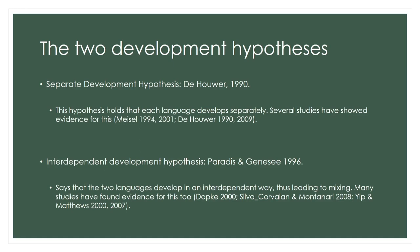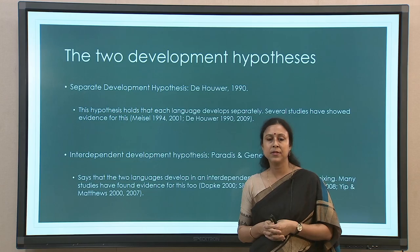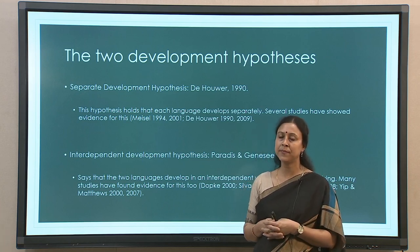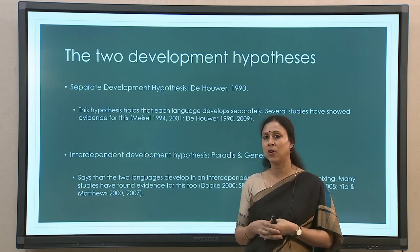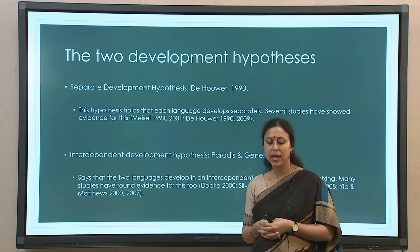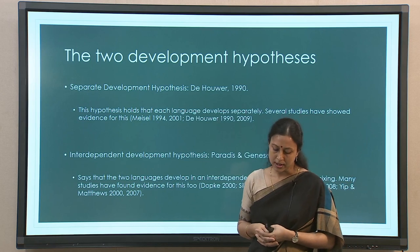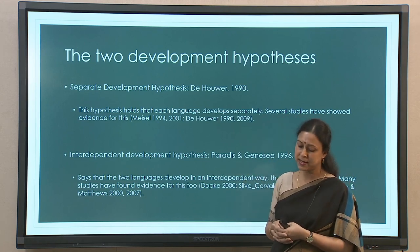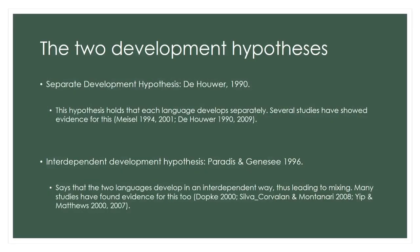This kind of contradictory finding brings us to two different development hypotheses for language skill among simultaneous bilingual children. One is the Separate Development Hypothesis (SDH) proposed by De Houwer, which holds that each language develops separately — there is no fused or unitary system; the systems develop independently of each other with no mixing up. On the other hand is what we have seen before: the unitary system, also called the Interdependent Development System by Paradis and Genesee, which says that the two languages develop in an interdependent way, thus leading to mixing. Both hypotheses have found support from many studies.